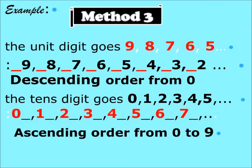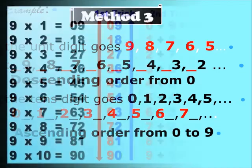Now we should turn to Method Three. The unit digits, when you get your answer, the unit digits go: nine, eight, seven, six, five, four, three, two, one, then zero — in a descending manner. And then the tens digits go in an ascending manner.